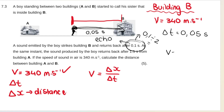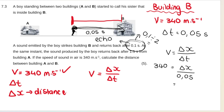Using the formula: speed equals distance divided by time. Speed is 340, time is 0.05 seconds. So distance equals 340 times 0.05, which gives 17 meters. The distance from the boy to building B is 17 meters.